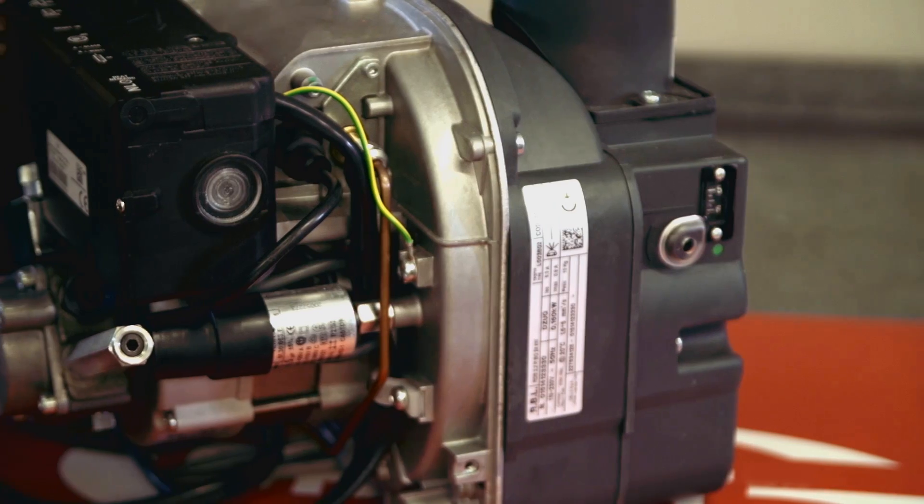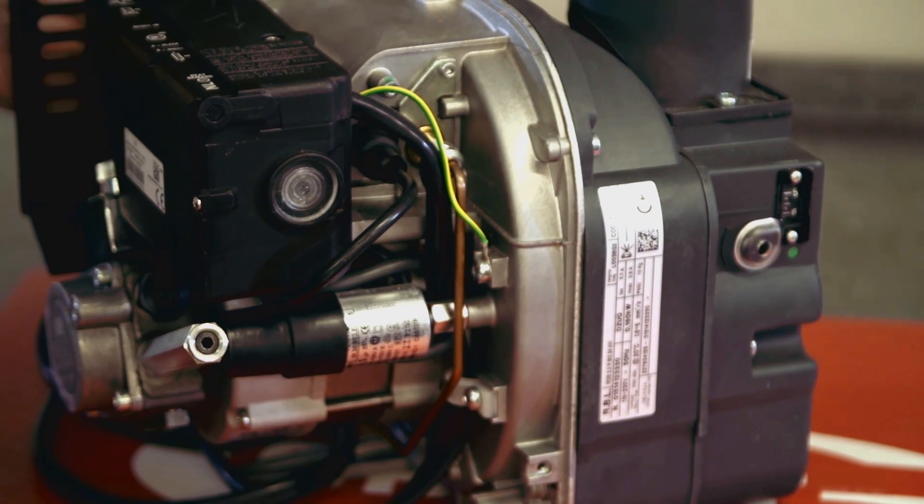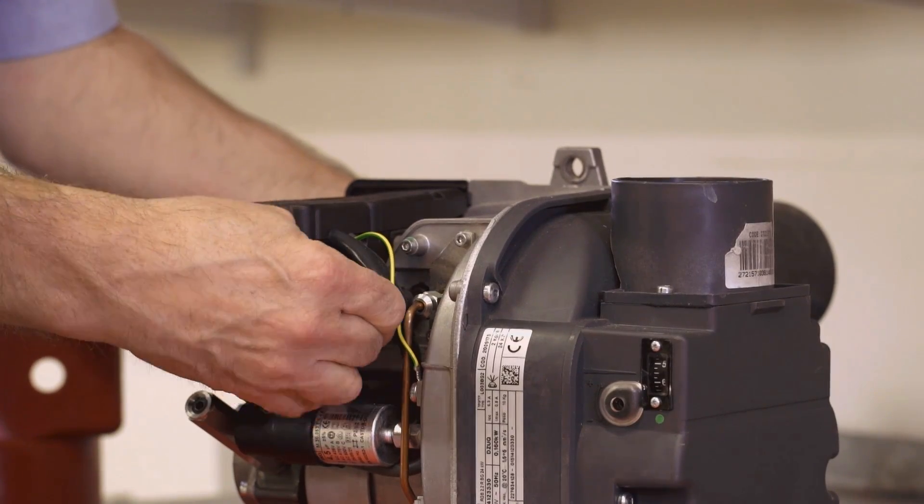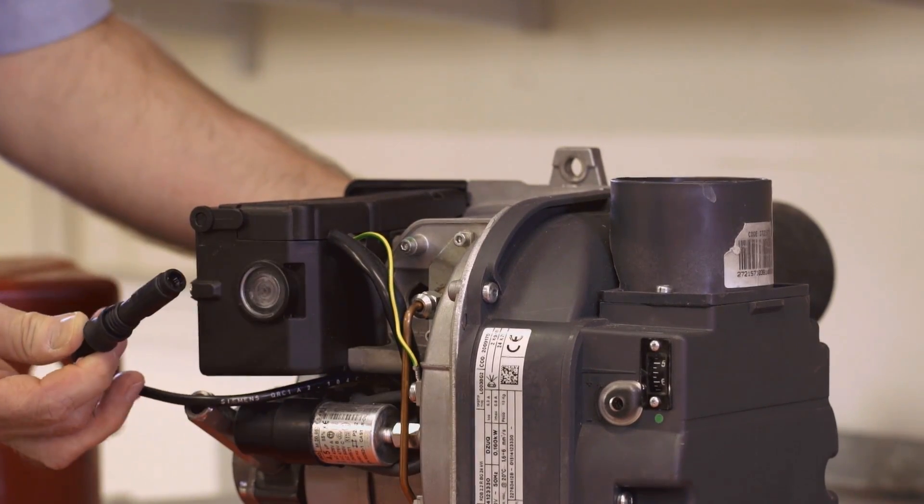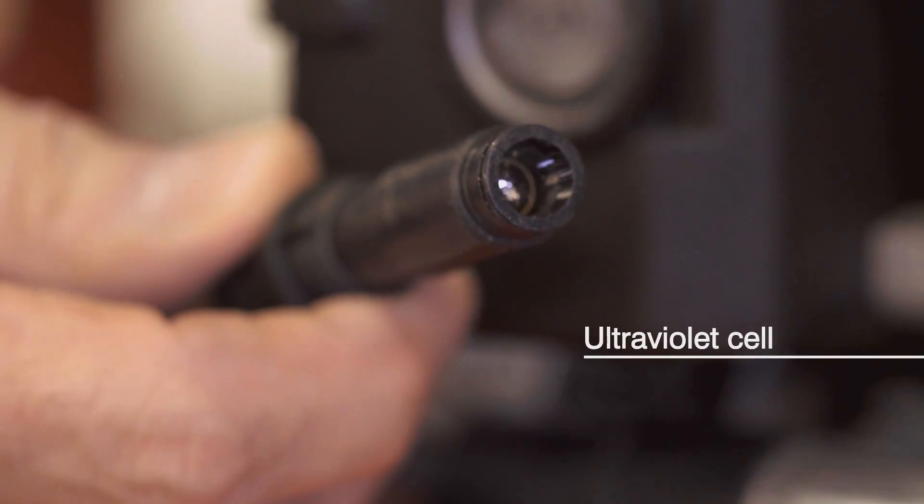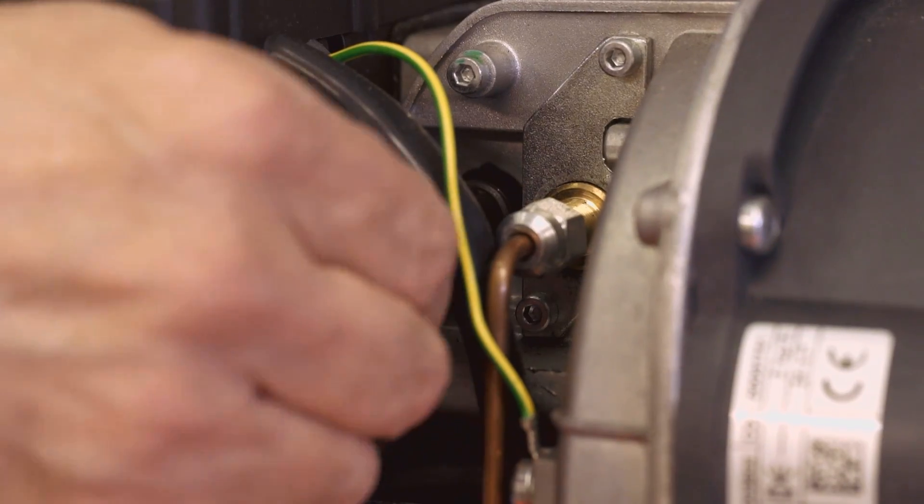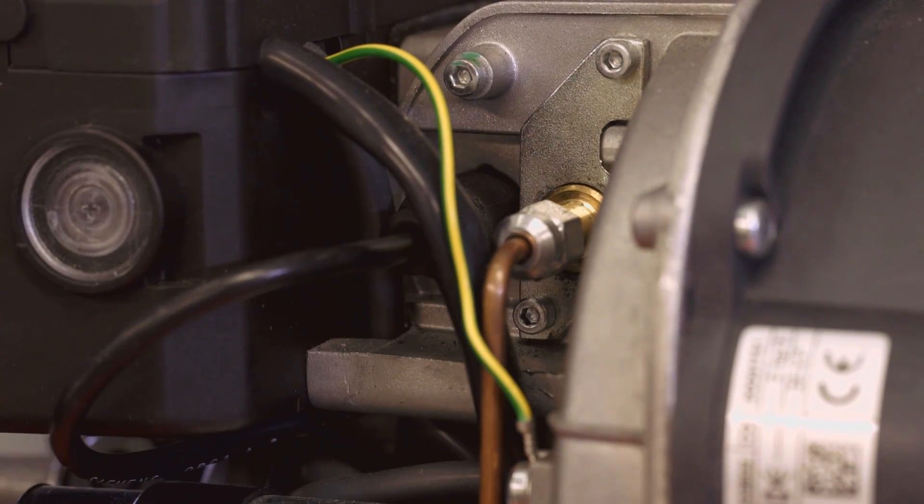The photocell is in the same position but this burner uses an ultraviolet or UV cell instead of the photoresistor more commonly used. This is used because the blue flame on this burner can't be seen by the usual photocell.